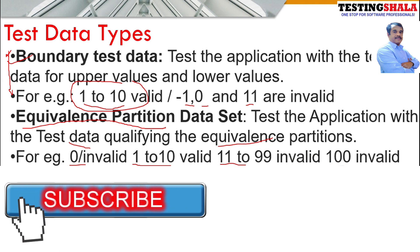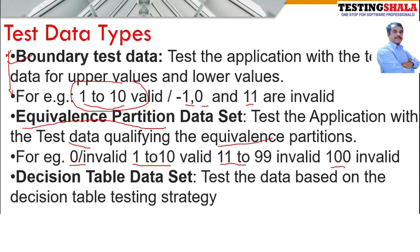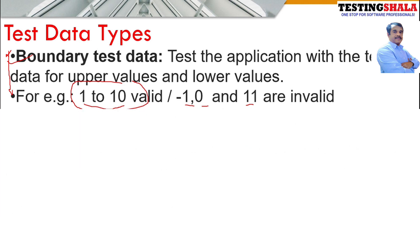This is also validated and tested using equivalence partitioning test data sets. Then we have one more type of test data derived using decision tables. These are the different types of test data which we normally use while testing any software application.